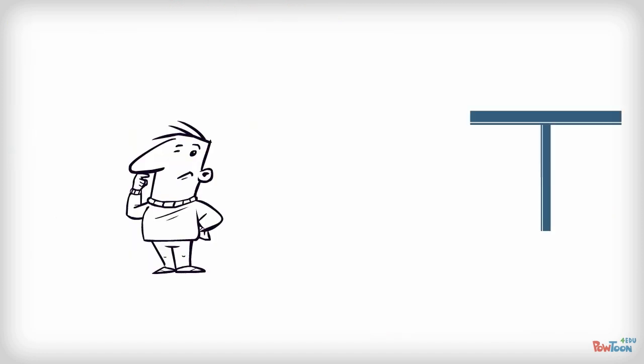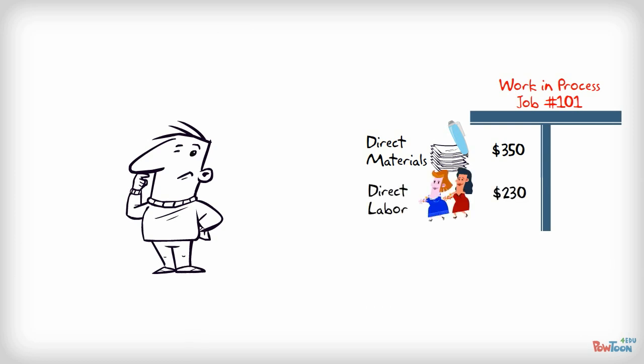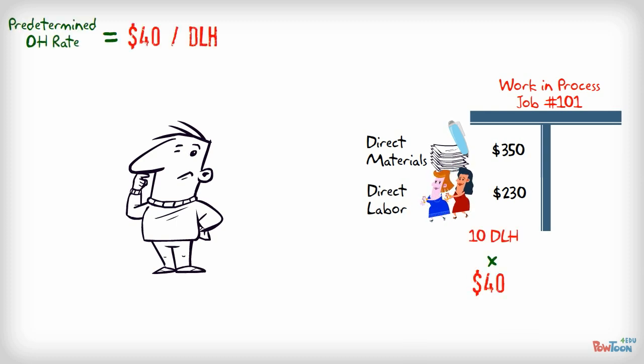Let's say that we are producing an envelope and we call this job number 101. We use $350 worth of direct materials, $230 worth of labor. We also know that to produce this product we needed 10 direct labor hours. Well that is easy. Take the predetermined overhead rate and multiply it with the direct labor hours that we have used to produce the envelope and find the manufacturing overhead cost: $400. So the total cost to produce the job is $980.